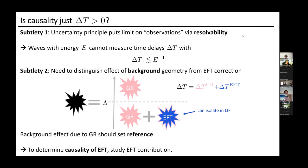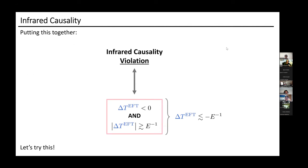You can have high-energy particles which only see the GR contribution decaying into particles with lower energies — those can go faster than the GR reference at low energies and then recombine. It's the sign of the EFT correction that matters when determining whether something violates causality with respect to the GR background. Together, you conclude that you have a causality violation if and only if both the EFT contribution is negative and the contribution is larger than 1/E.